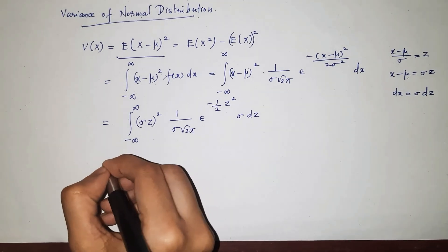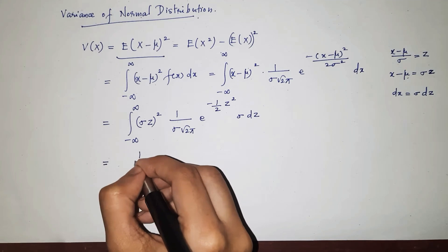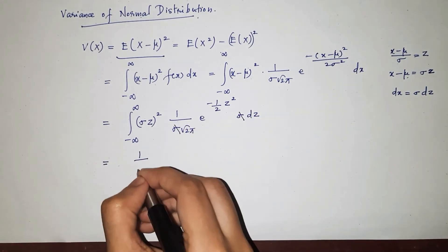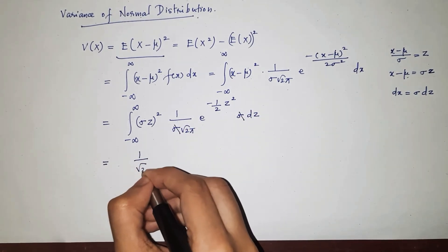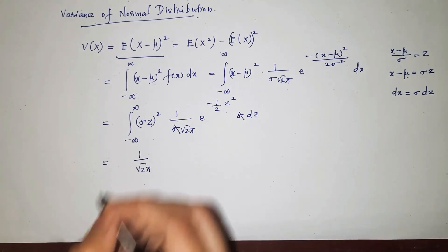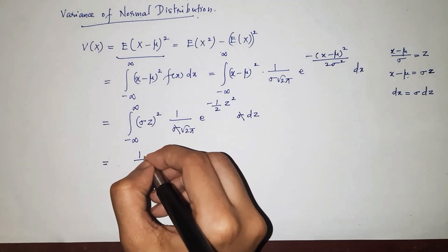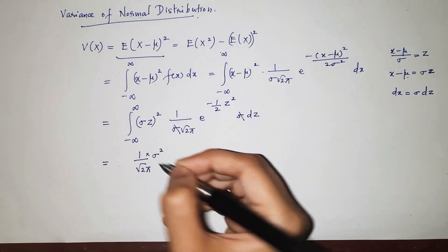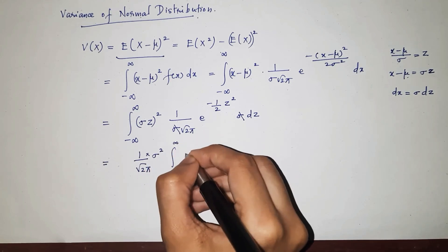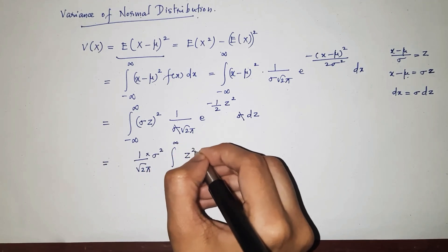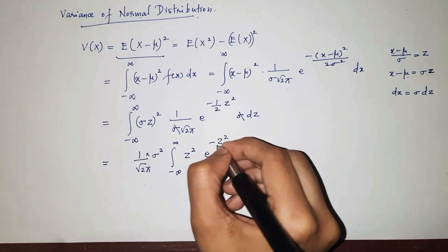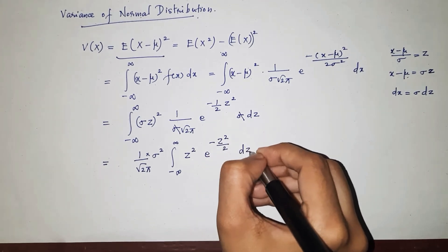Cancelling the sigma terms, I get (1 over root 2 pi) times sigma squared, integrated from minus infinity to infinity, of z squared times e raised to minus z squared over 2, dz.